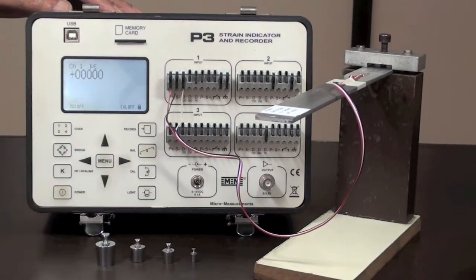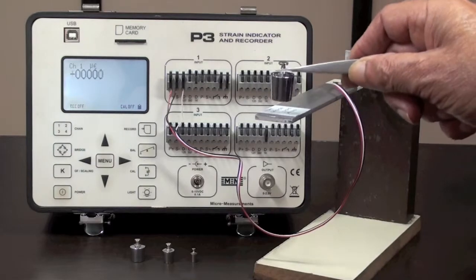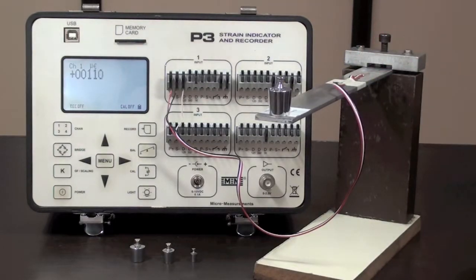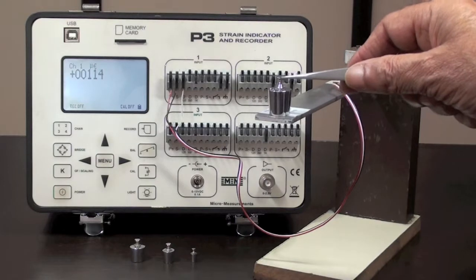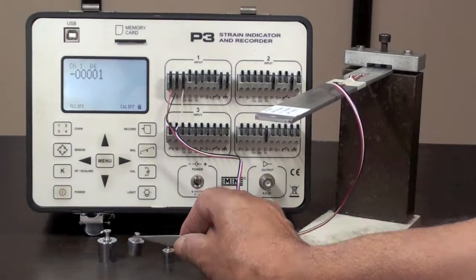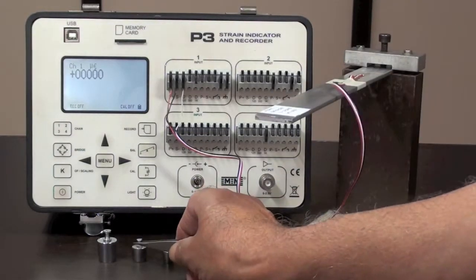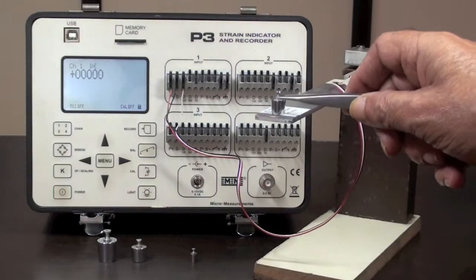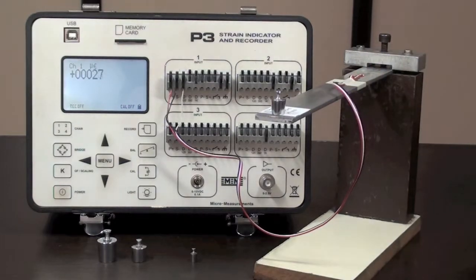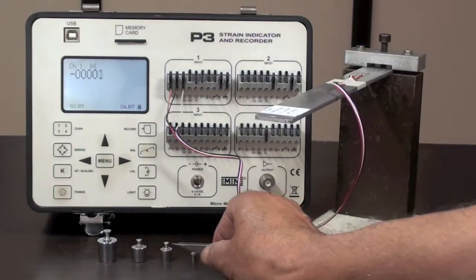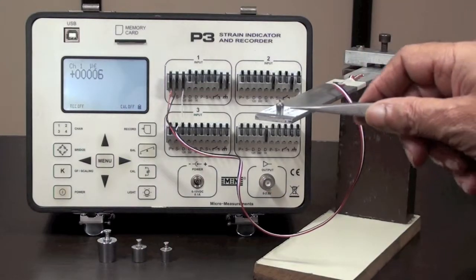Now the last digit on the display will correspond to 0.1 microstrain. With 20 grams on the beam, the reading should be 11.1 microstrain. With 10 grams, it should be 5.5 microstrain. With 5 grams, it should be 2.7 microstrain and with 1 gram, the reading should be 0.5 microstrain.